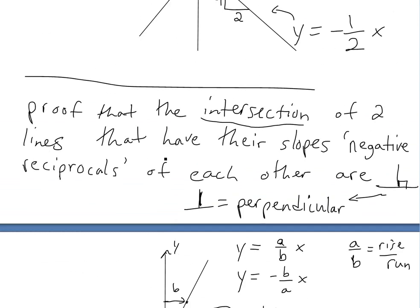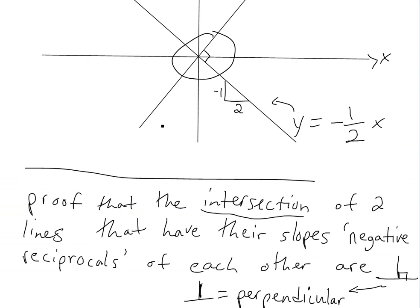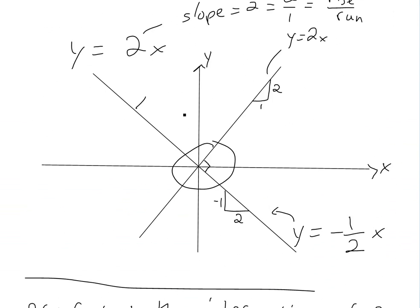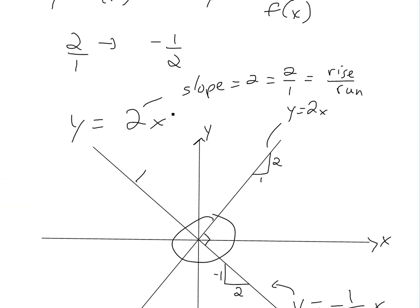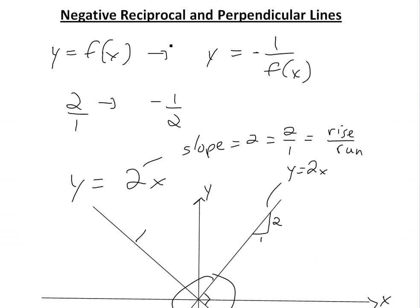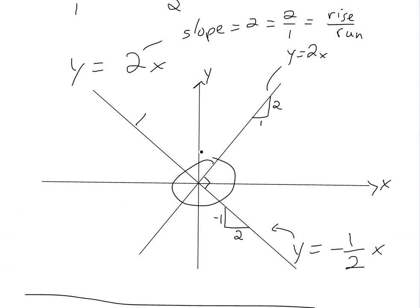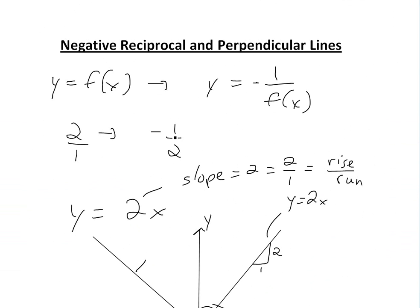Hopefully you learned this one. This is useful — look into orthogonal trajectories, which is my next video. It's basically going to use this principle: that the negative reciprocals of intersecting lines are going to be perpendicular. Well, that's all for today. Hopefully you learned something — stay tuned for another Math Easy Solution.